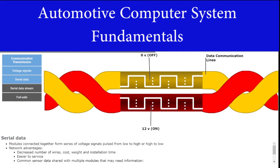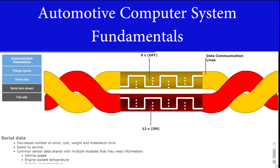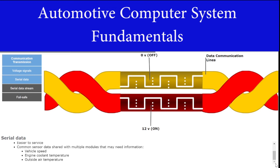Serial data is information that is transmitted by a series of rapidly changing voltage signals pulsed from low to high or from high to low. When most control modules are connected together, they form a network. In a network, the number of wires needed is decreased, which saves on cost, weight, and factory installation time, making servicing the vehicle easier for the technician. Another advantage is that common sensor data can be shared with control modules that may need specific information such as vehicle speed, engine coolant temperature, and outside air temperature.